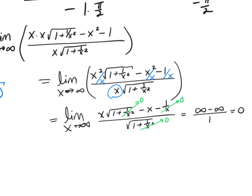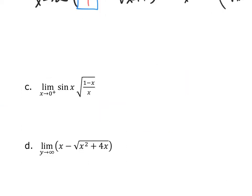For this example, as x goes to zero from the right, I end up with a zero multiplied by infinity. This is an indeterminate type, so I'm going to either divide one by the other. In particular, I'm going to use the algebra fact that 1 over (1/a) equals a, and reverse this for the square root portion — writing sine of x over (1 over the square root of (1−x)/x).